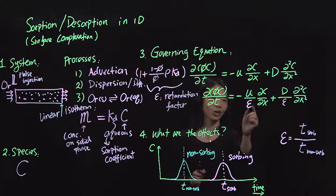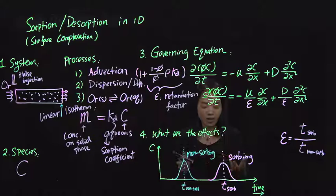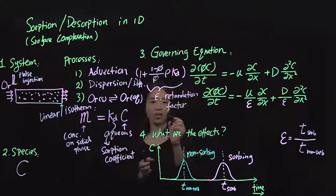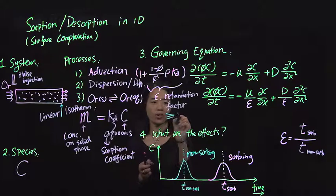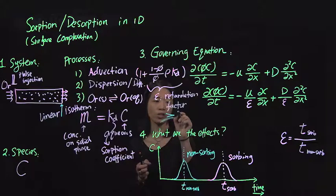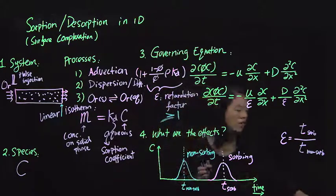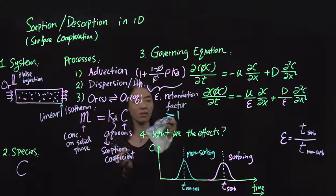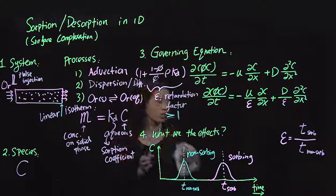The u, or the velocity appears as if it's slower, because this retardation factor is almost always larger than 1. If it's equal to 1, then it's essentially the non-reacting tracer. So it really should be larger than 1. And so it's going to be slower than the non-sorbing one, than the tracer.